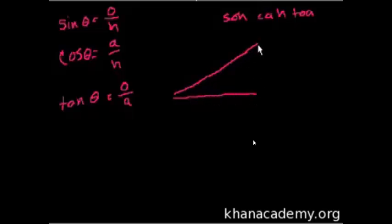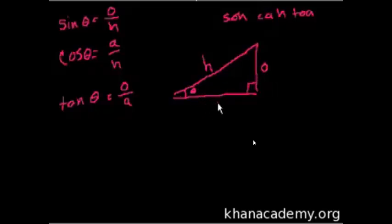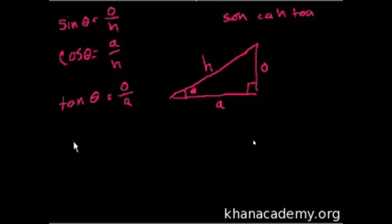Here's my right triangle. Let's call this angle theta. This is the hypotenuse H. This is the opposite side — opposite of theta. And this is the adjacent side. What do we know about the relationship between the opposite, adjacent side, and the hypotenuse? What does the Pythagorean theorem tell us?